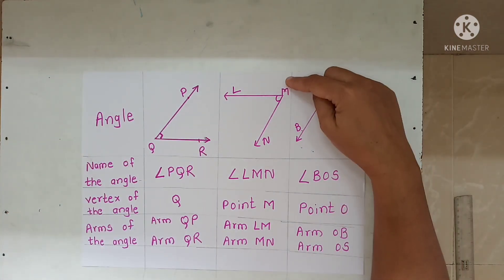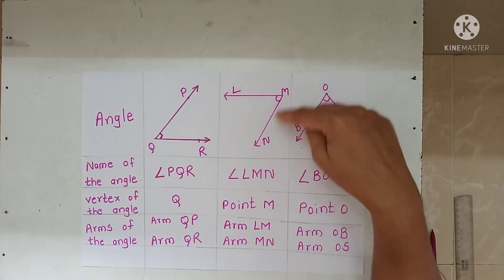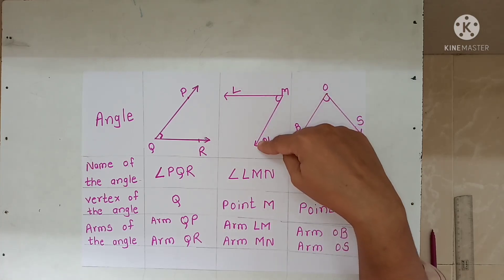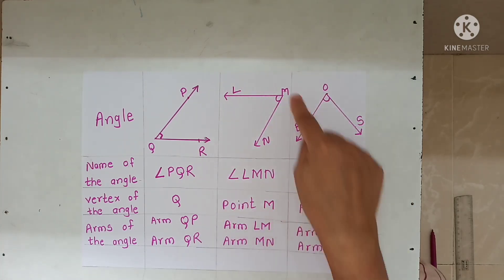Second angle is L, M, N. The vertex is M. Point M is the vertex.